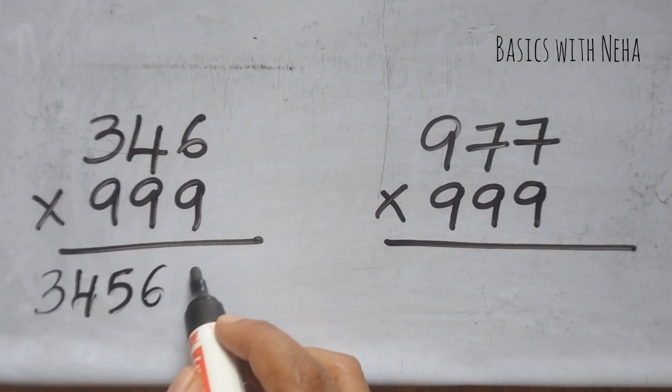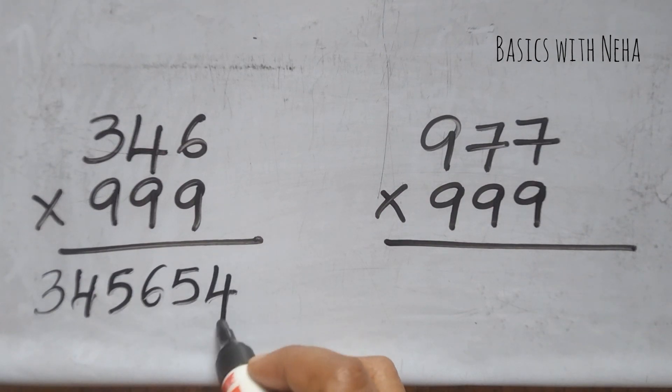9 minus 3 is 6, 9 minus 4 is 5, 9 minus 5 is 4. And this will be the answer.